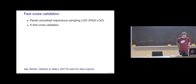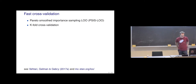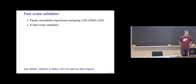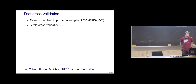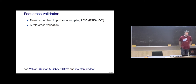Today I will continue where we left off last time. First, about computational issues — how we can do this in reasonable time — and then model comparison, model selection, some warnings, relations to other approaches. During the second half, I'll discuss topics which go beyond cross-validation, and in the end I will also discuss more about the project work presentation.